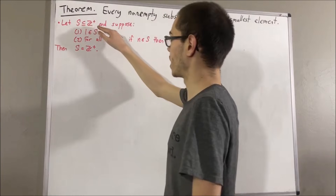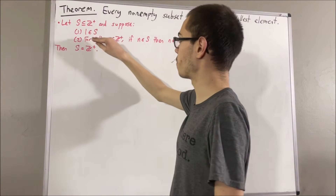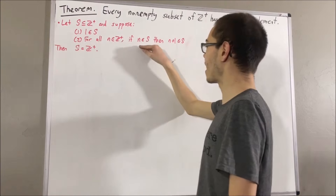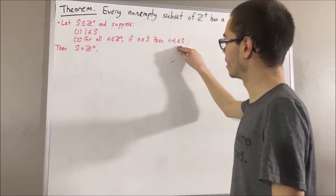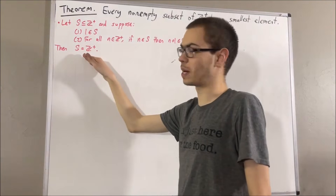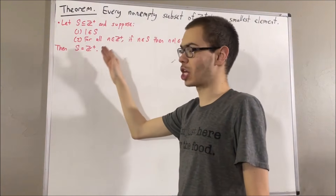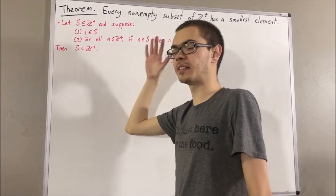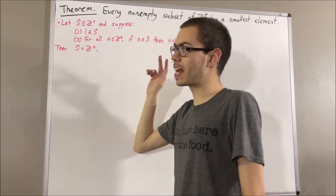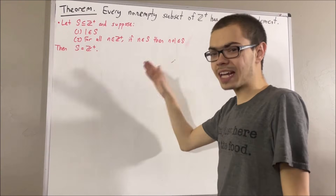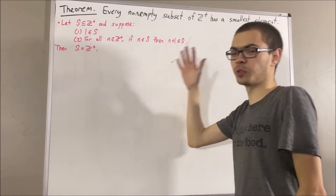Let S be a subset of the positive integers, and suppose 1 is an element of S, and for all positive integers n, if n is an element of S, then n plus 1 is an element of S, then S is equal to the set of positive integers. Some other facts we know about the integers: 1 is the smallest positive integer, and given any two integers a and b, a is greater than b if and only if a is greater than or equal to b plus 1.